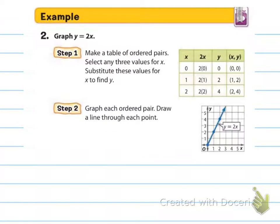Example two says Y equals 2 times X. Make a table of ordered pairs. Select any three values for X and substitute these values for X to find Y. For us all to get the same answer, I'd like for you guys to use the same numbers. I'd like for you to use 0, 1, and 2 whenever we can because that gives us a true line. So 2 times 0 is 0, 2 times 1 is 2, and 2 times 2 is 4.